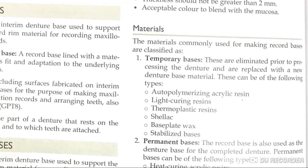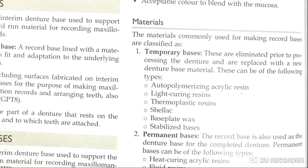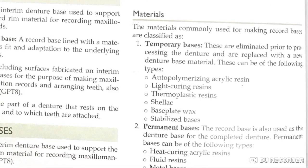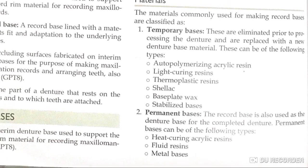What are the materials used in the record base? Temporary bases are materials used and eliminated prior to processing the denture, replaced with new denture base materials. These include autopolymerizing acrylic resin, light curing resin, thermoplastic resin, shellac base plate wax, and stabilizing bases from shellac. For permanent bases, the materials used are heat cure acrylic resin, fluid resin, and metal bases.